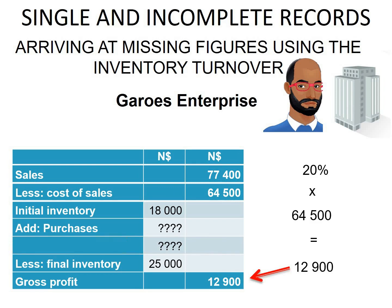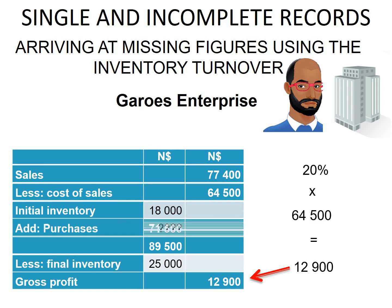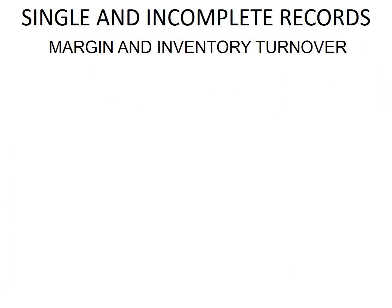From here we need to find the total from adding initial inventory plus purchases. To get that, we take cost of sales plus closing inventory, just as in a previous example. Finally, to calculate purchases, we take that total and subtract our opening stock, and then we have our figure for purchases.